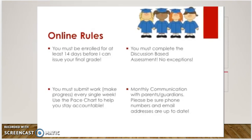Monthly communication with your parents and guardians is a must. Please make sure that the phone numbers and email addresses in our database are up to date so that we can contact them. I send out progress reports to the parent or guardian email on file, and if your parent responds with a simple reply, I can count that as your monthly contact.